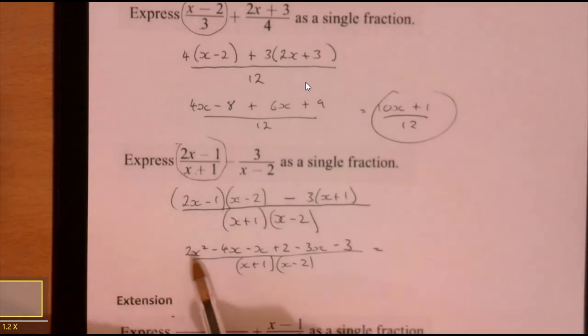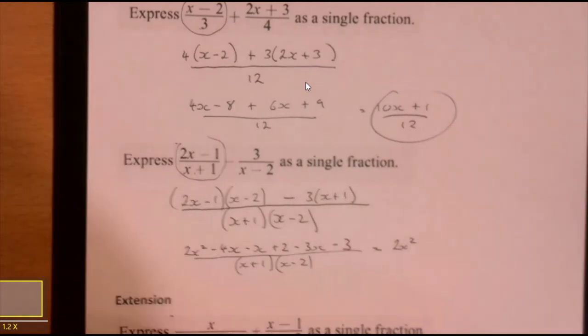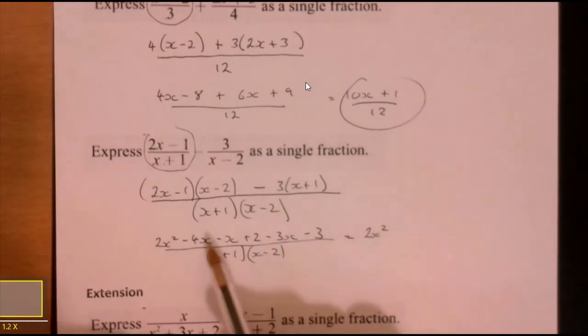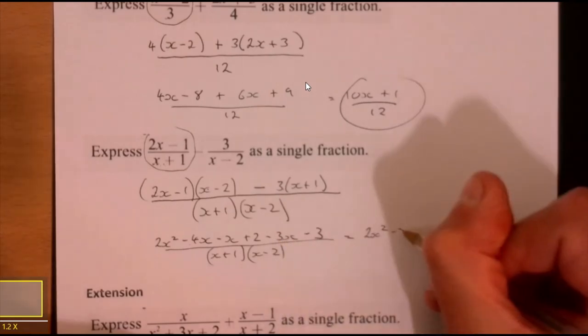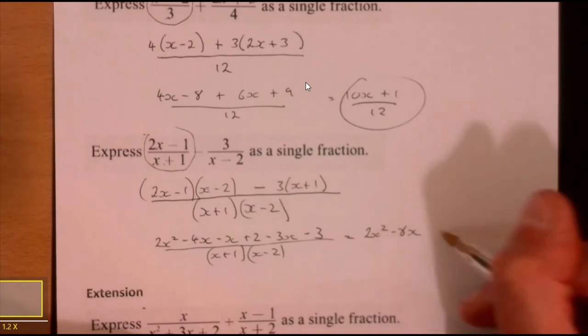I could multiply it out, I'm just going to leave it like that, it's fine. Right, let's just tidy up this top part. So what have we got? We've got 2x squared, and then we got minus 5x minus 6, 7, 8, minus 8x, and then plus 2 minus 3, it's going to be minus 1.